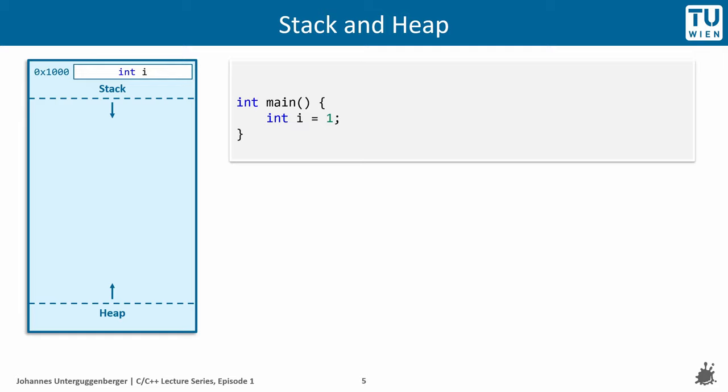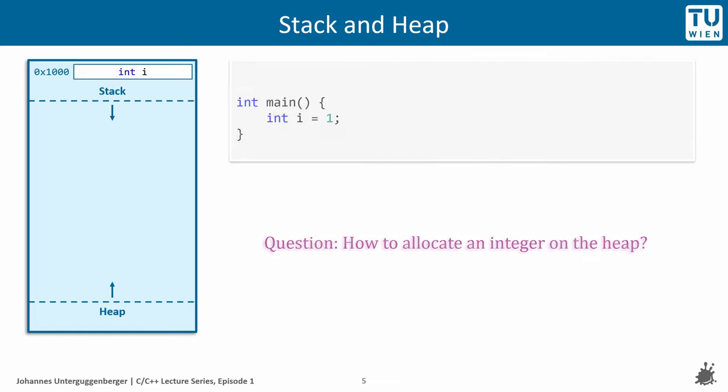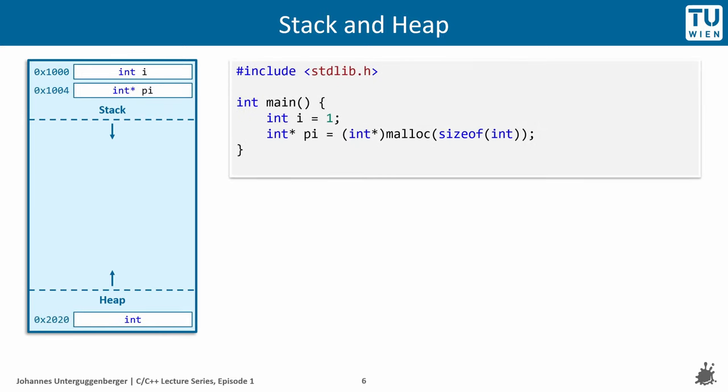And the answer is that we have to explicitly allocate memory on the heap. Using the function malloc, we have allocated memory of the size of one integer on the heap. What we also got is another variable on the stack, which is a pointer to the memory address of the memory that has been allocated on the heap.